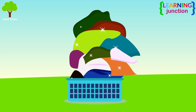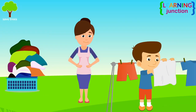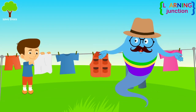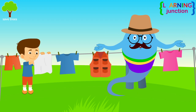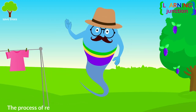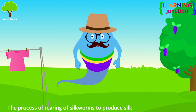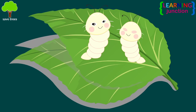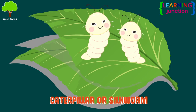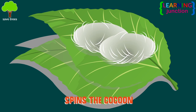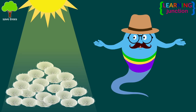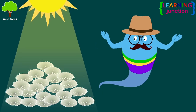Clothes made from silk are liked by everyone because of its texture. But do you know how silkworm produces silk? The process of rearing of silkworms to produce silk is known as sericulture. The caterpillar or silkworm spins the cocoon, which further develops into silk moth. The cocoons are boiled and kept under the sun.